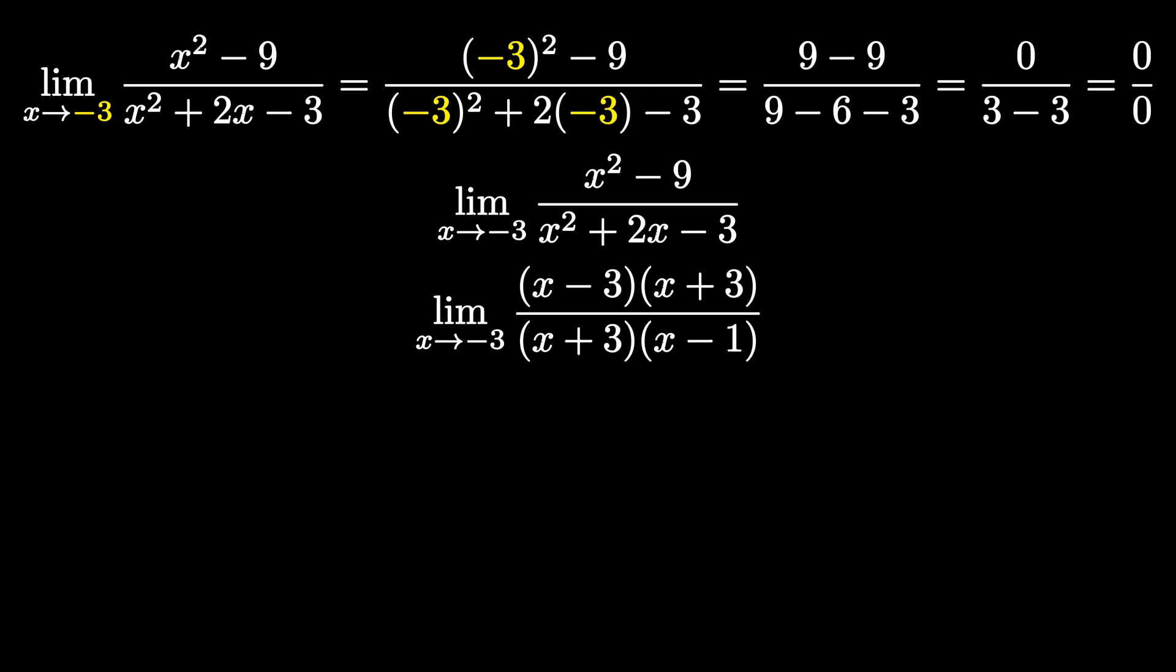So continuing on, we've factored our bottom to become x plus 3 times x minus 1. So now we have factored both the top and bottom of our function. Now notice that in both the top and bottom, we have an x plus 3. So as you see, when we have a common factor in both the top and bottom of our function, this means that this is a hole. And since there is an x plus 3 in both the top and bottom, we can cancel out the x plus 3s. So we're going to cancel out the x plus 3s and get rid of these holes. And once we do that, that will leave us with x minus 3 all over x minus 1.